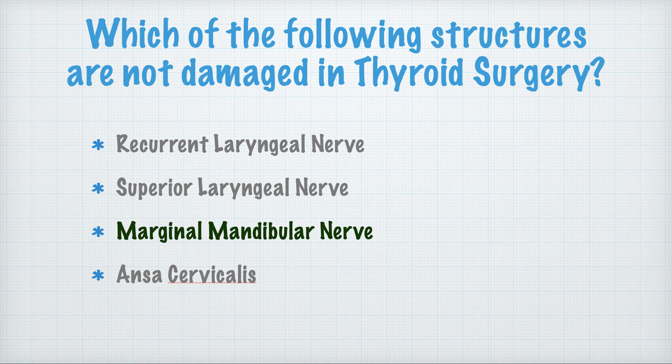Which structure is not damaged in thyroid surgery? The recurrent laryngeal nerve, superior laryngeal nerve, and ansa cervicalis are all damaged. The marginal mandibular nerve is not damaged in thyroid surgeries.